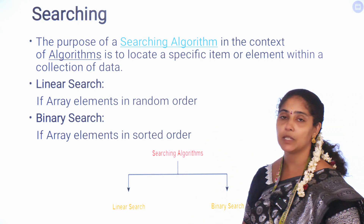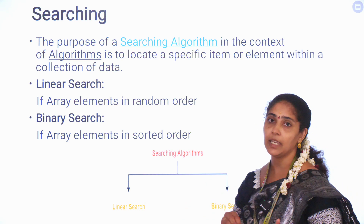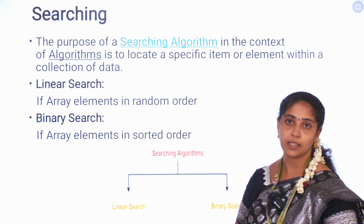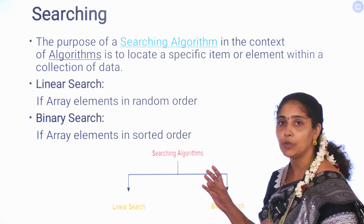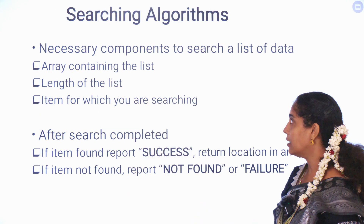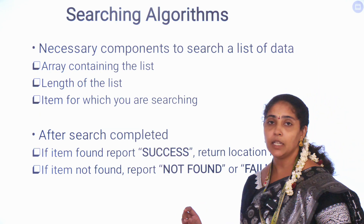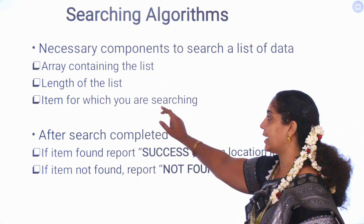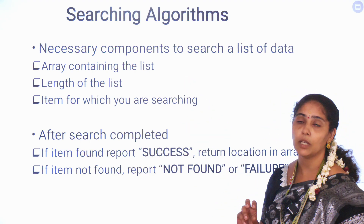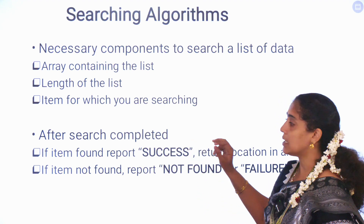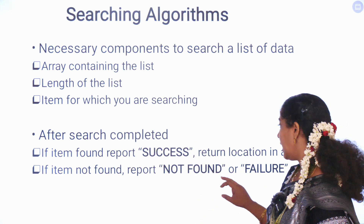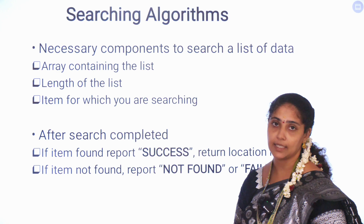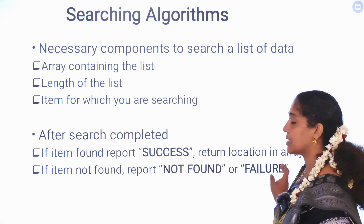Linear search is for random number of elements — there are no restrictions, any elements or numbers can be searched. Binary search, however, requires a sorted array of elements. In a searching algorithm, we need three important components: the array containing the list, the length of the list, and the item for which you are searching. Once the search is over, we get either success — meaning the item is found — or failure, meaning the item is not found.